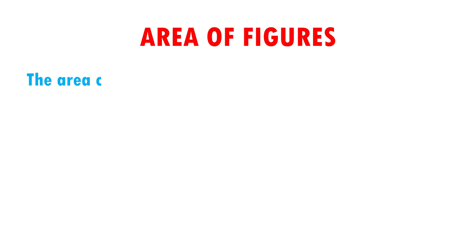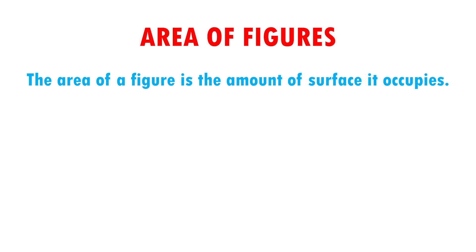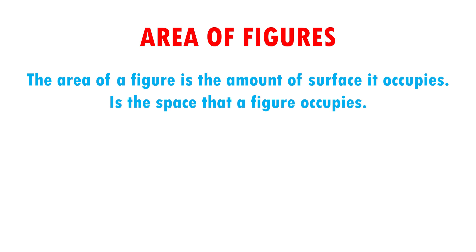The area of a figure is the amount of surface it occupies. In other words, the area is the space that a figure occupies. To measure the area of a figure, choose a unit square and count how many squares the figure occupies.